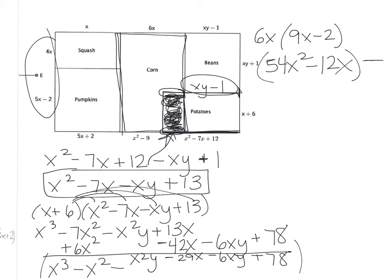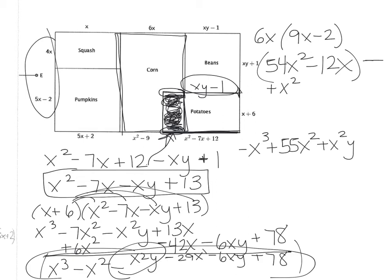Okay, so what I have is 54x squared minus 12x minus all of this, all of this down here. So all the signs are going to change. So I'm basically going to be subtracting x to the third, adding x squared. Now I'm thinking about adding x squared to 54x squared, so that's going to give me 55x squared. And then I'm adding this x squared y, which I don't have any x squared y's here. And then I'm adding 29x, since you have a 12x, you can add 29x to the negative 12x, leaving you with 17x, right?